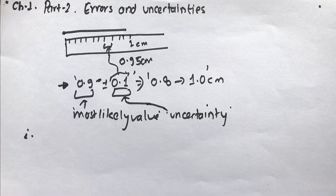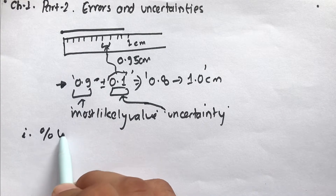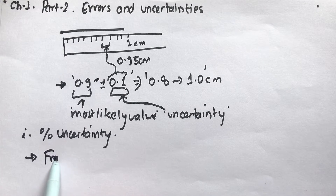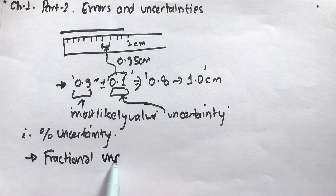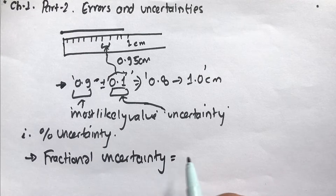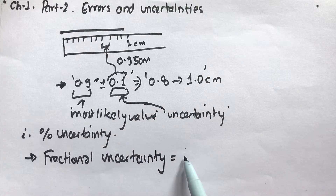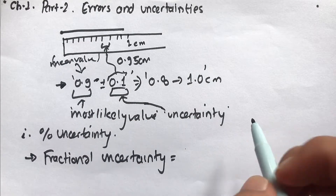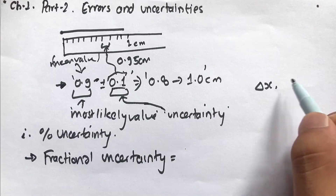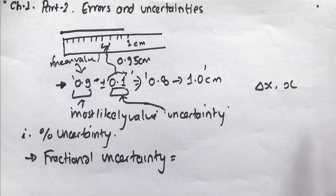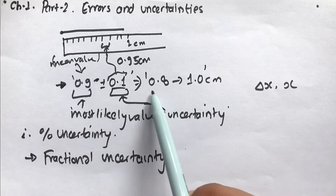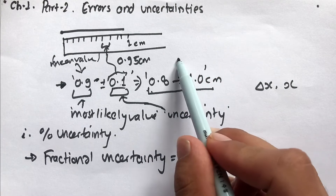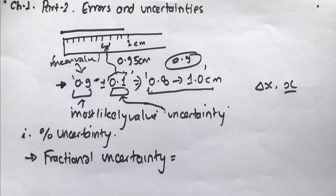Now let's talk about percentage uncertainty. To calculate it, we find something called fractional uncertainty. Fractional uncertainty is basically the uncertainty divided by the mean value. We call it a mean value. We denote uncertainty by delta x and the average value by x. It is called a mean value because the accurate value of this line lies between 0.8 and 1.0 cm, and the average of 0.8 and 1.0 is 0.9 — that's why 0.9 is the mean value.